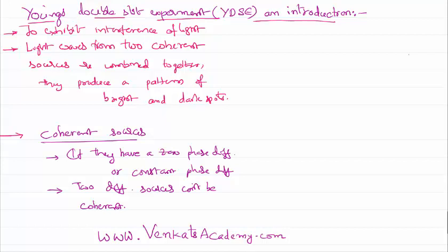Why can't they be coherent? Simply because when sources are emitting light, they emit light because of excited electrons. Electrons in the atoms are given energy, they get excited, and they come back to the ground state, emitting energy. There are lakhs of electrons jumping from higher to lower orbits. For two different sources to be coherent, that many lakhs of electrons would have to jump identically, which is not practically possible. Therefore, two different sources will never be coherent.